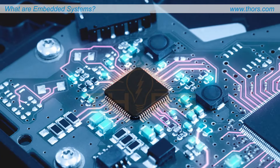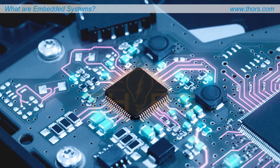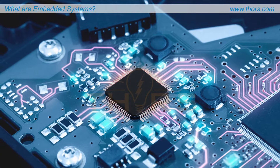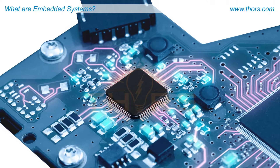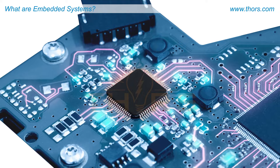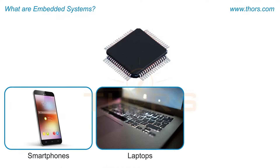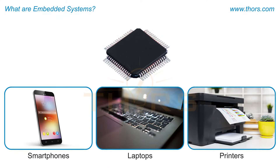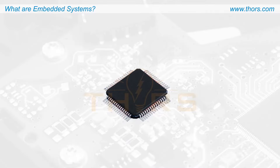Embedded systems are modern electronic systems which consist of electronic components that are mounted on a single plate and embedded or inserted into electronic devices such as smartphones, laptops, and printers. Modern electronic systems are circuits that connect electronic components.